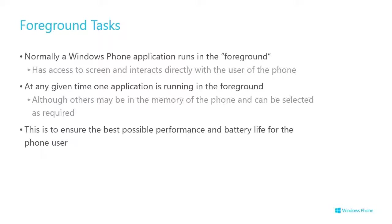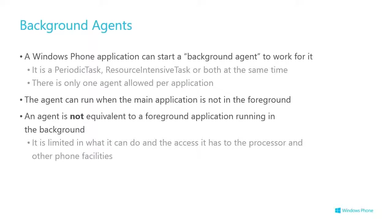So foreground tasks — that's where apps run right now. We do one app at a time to ensure a great user experience. That app is running in the foreground and has access to the user, the screen, and interaction. At any time, only one is in the foreground. We may have dormant apps, cache hits and misses happening in the background, and tombstoning. This is all to ensure best performance and battery life — people want their phone to last the day.